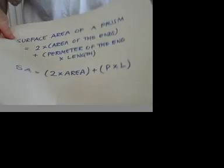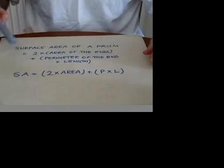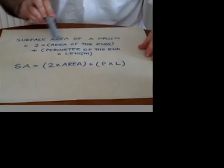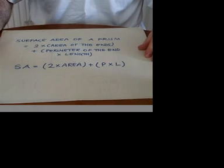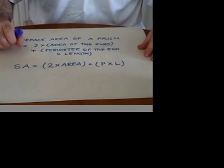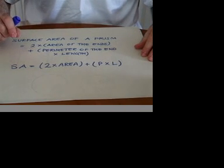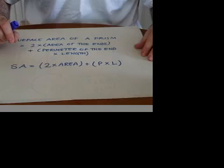So if you remember back to our original statement, the surface area of the prism is twice the area of the ends plus the perimeter of the end times the length. So that's how it works for a circle, and it will work exactly the same for any prism.